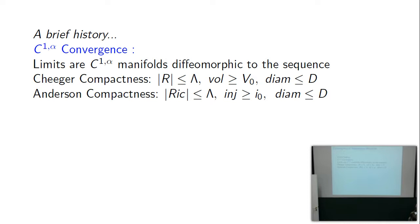The injectivity radius bound required in Anderson's compactness is a consequence of Cheeger's conditions. C1-alpha convergence means you have a sequence of manifolds with a metric tensor — the manifolds change and the metric tensor changes. As a consequence of these conditions, they turn out to be only finitely many diffeomorphism types, so by pigeonhole one repeats for a subsequence. Once in the same diffeomorphism class, you pull back the metric tensor and it converges in C1-alpha.